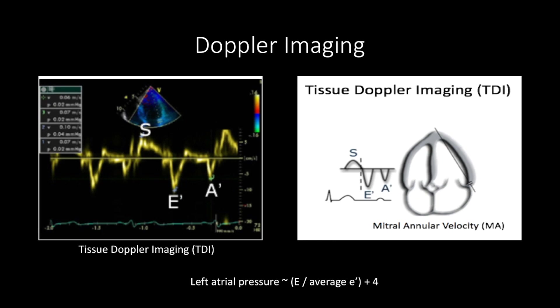You will then see an image similar to the one shown on the left. After this is done, perform TDI on the lateral annulus as well. Once both measurements are obtained, they can be used along with pulse wave Doppler to assess the different grades of diastolic dysfunction. An E divided by the average E' plus 4 is a good estimation of left atrial pressure.